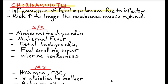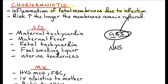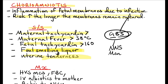Chorioamnionitis is inflammation of the fetal membranes due to bacterial infection. The organism of concern is Group B Streptococcus, because it is commonly associated with early neonatal sepsis, meningitis, and bronchopneumonia. The risk increases the longer the membranes remain ruptured, so in PPROM the risk of chorioamnionitis is higher. Signs and symptoms include maternal tachycardia, maternal fever above 38°C, fetal tachycardia with heart rate above 160, foul-smelling liquor, and uterine tenderness. Maternal tachycardia is defined as heart rate above 90.